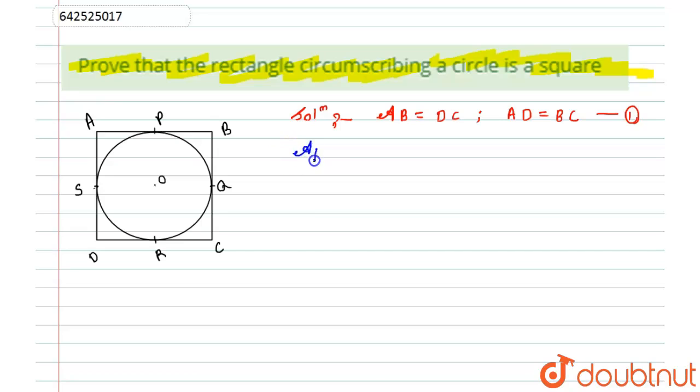From this, I can say that the length of AP should be equal to the length of AS. Similarly, the length of BP equals the length of BQ. The length of CR equals the length of CQ, and the length of DR equals the length of DS.